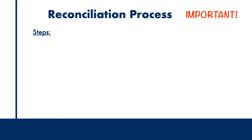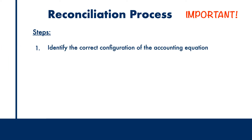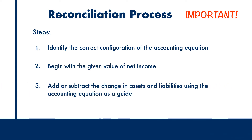Let's begin by looking at the overall steps involved in the reconciliation process. First, we will identify the correct configuration of the accounting equation depending on what needs to be converted to what. Two, we will begin our calculation with the given value of the net income. And three, we will add or subtract change in assets and liabilities from the net income using the accounting equation as a guide.